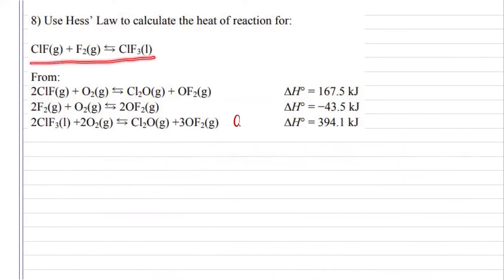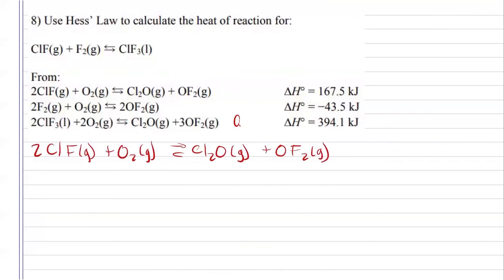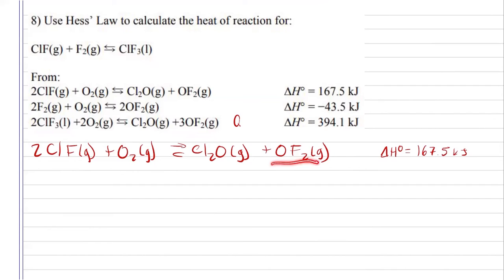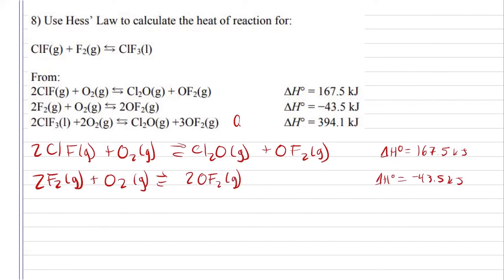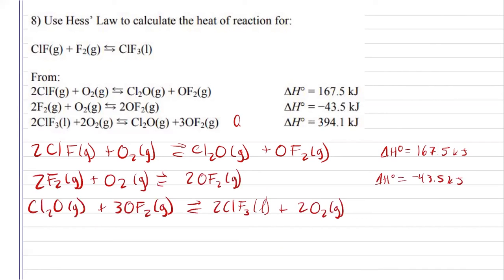For number eight, this is the reaction that we want to find the enthalpy for, and we are given each of our three steps. My first reaction has CLF as a reactant, which is what I need, so I'm just going to keep that one as is — no changes to my enthalpy there. My third reaction is the only one that has CLF3. I have that one as a reactant here, but I need it as a product, so I can flip my third reaction, which will give me three oxygen difluorides as reactants. I already have one; this one will give me another two, so I can just keep that one as is and bring that one down with no changes in enthalpy. And I can just flip my third reaction, so it will change my enthalpy from positive to negative.